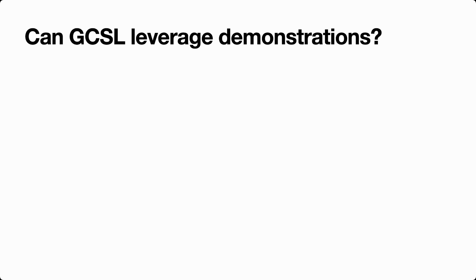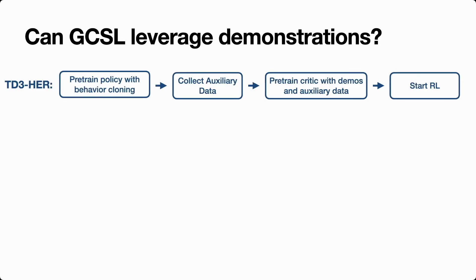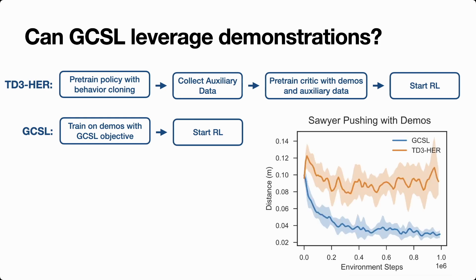The second question we are interested in understanding is whether GCSL can better leverage demonstration data compared to other RL methods. To put this in context, currently the best way to train a value based method with demonstrations is quite complicated, requiring collecting more data to stabilize learning and running auxiliary objectives. In contrast, to use demonstrations with GCSL, we can just treat them like any other trajectory and run the GCSL objective of relabeling and imitation. When we empirically compared these two methods, we found that GCSL is able to learn far more gracefully in the presence of demonstrations compared to TD3.